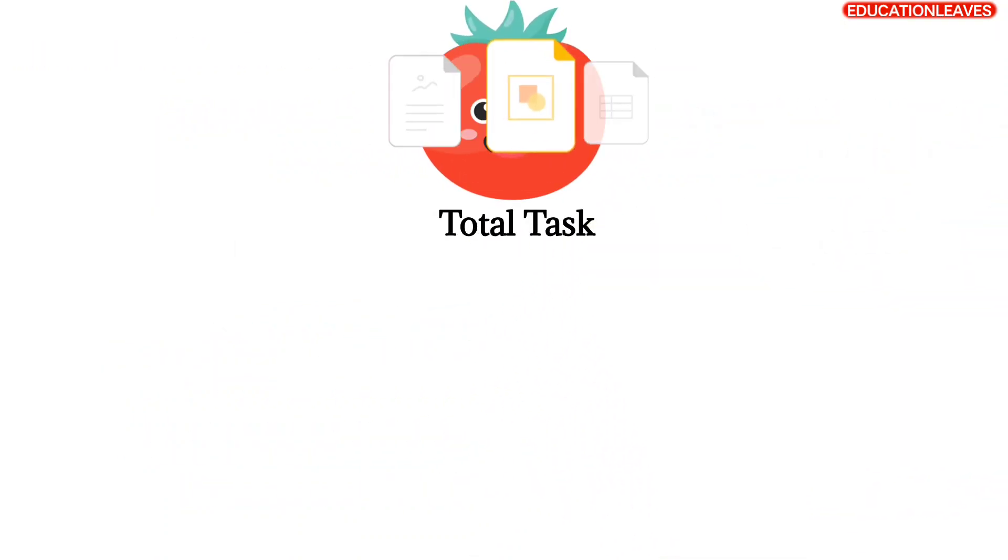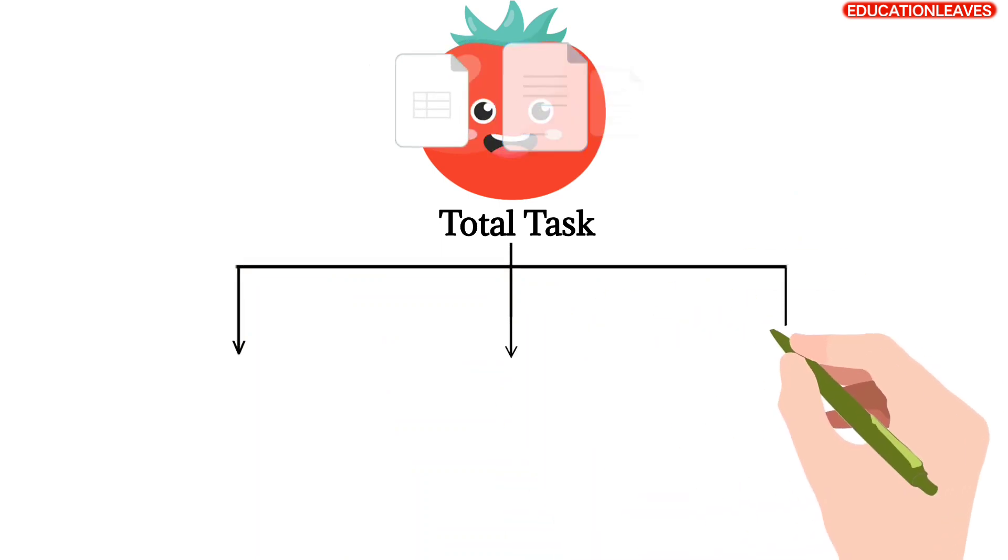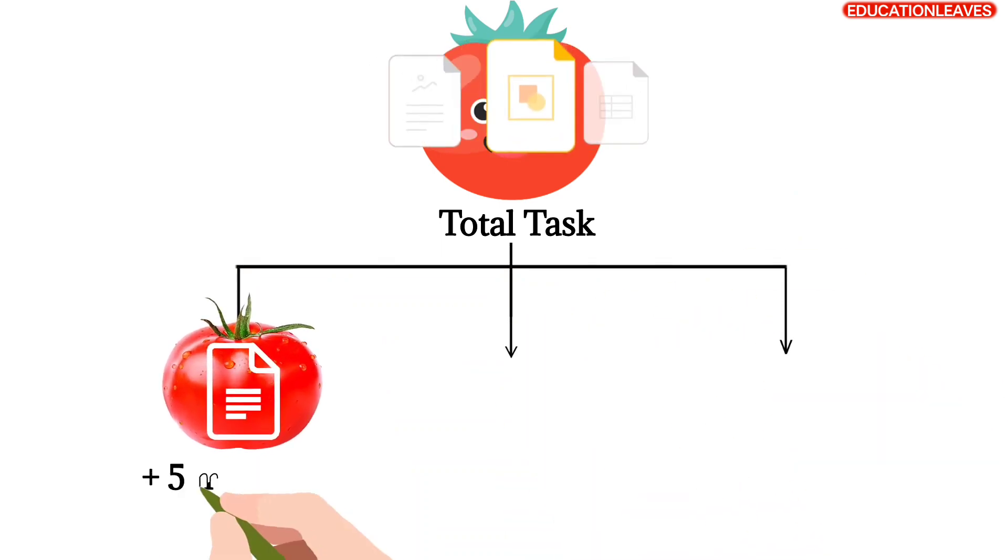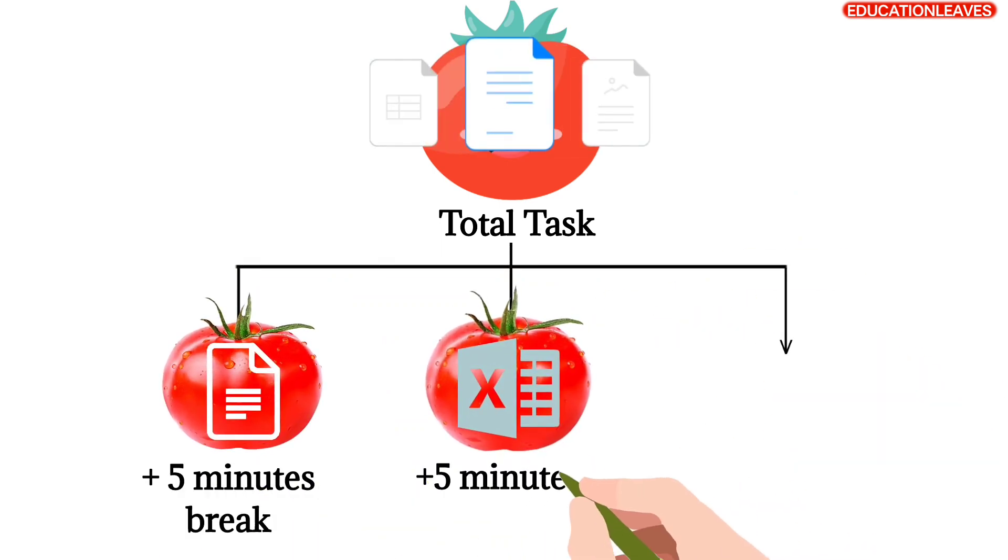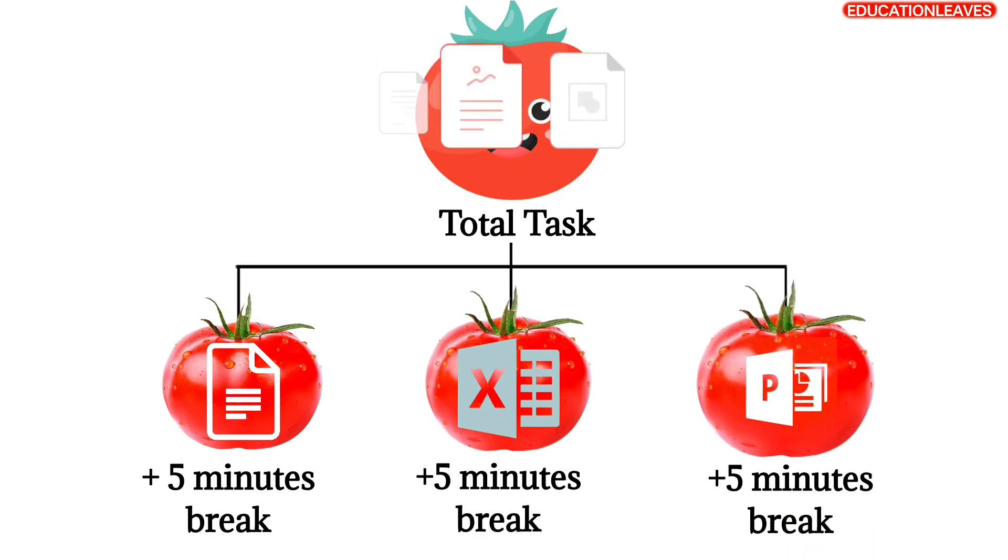The Pomodoro Technique basically involves breaking your work or study time into intervals called Pomodoros, typically lasting 25 minutes, followed by short breaks. Let's discuss the process in detail.